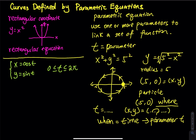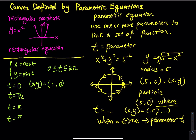When t equals 0, what is x and what is y? And then what about when t equals π/2, t equals π, t equals 3π/2, and t equals 2π? Tell me all the x and y coordinates for each value of t.